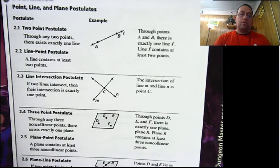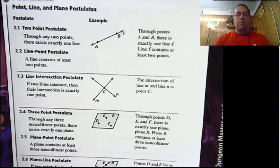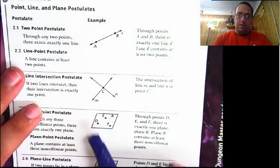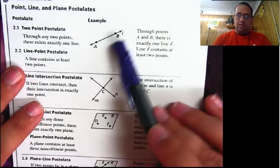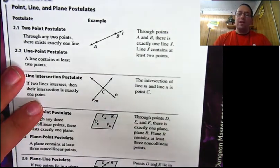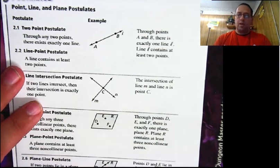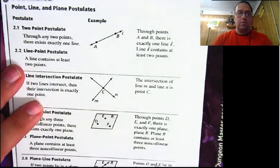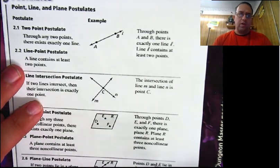These are things that are based on assumptions in planar geometry. Some of these will not be true if you're looking at spherical geometry. For example, the first one: the two-point postulate. Through any two points, there exists exactly one line. If we're talking about on a flat surface, on a plane, that's the only line I can draw through point A and point B. If we're talking about on a sphere, I could draw some other lines through points A and B, but we're doing it with planar geometry, so it's a postulate. We can't even prove it, but it always works as long as we make some basic assumptions that we're on a flat surface.